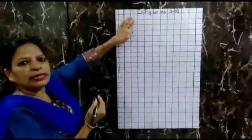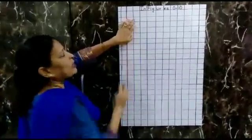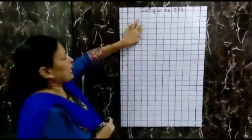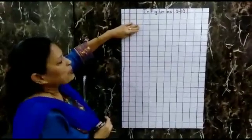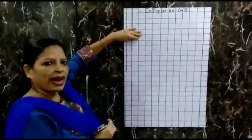And when you write the number, see that you touch the bottom line. Bottom line means what? This blue line. And for every number, you have to leave a square and write.